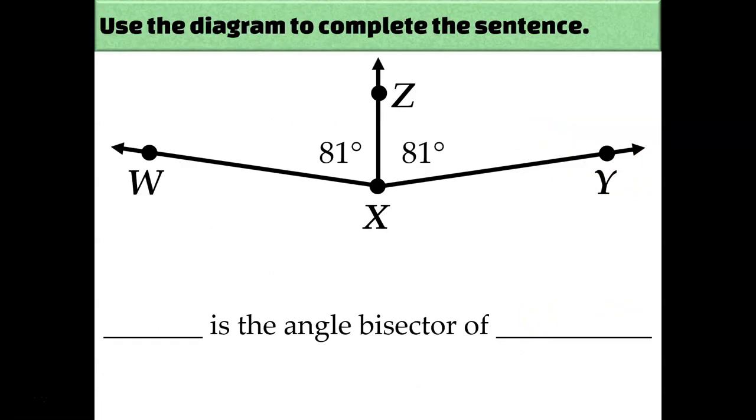So in our first example, I want us to analyze this diagram and fill in these blanks. Blank is the angle bisector of blank. In other words, what's the name of the ray that cut an angle in half? And what's the name of the angle that got cut in half? Well the ray that cut angle WXY in half is this one right here. You do have to call it XZ. Remember that to name a ray you start at the endpoint and go to some other point on the ray. So I have to start at X and then go to Z.